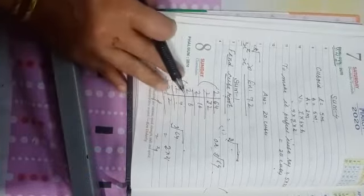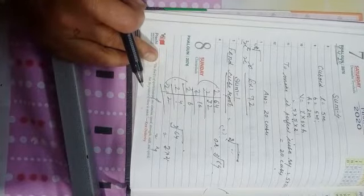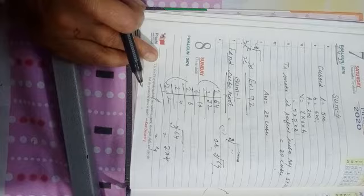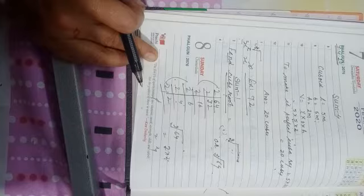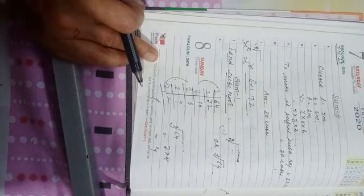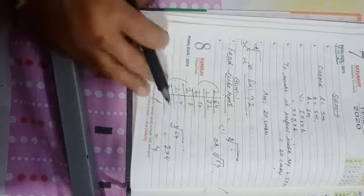You can verify this: learn the table of cubes up to 20. Cube of 4 is 64, so the cube root of 64 is 4. But you cannot write the answer directly — you must show it by the prime factorization method. If you just write 64 divided by 4 equals 16 without showing the method, you will not get full marks. Also, 4 is not a prime number, so your working would be wrong. Keep this in mind.